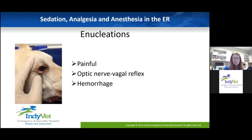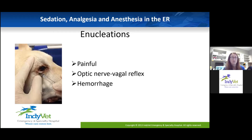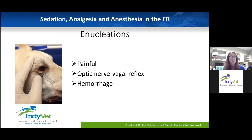Moving on to enucleations — there's no reason a GP shouldn't be able to do an enucleation. It's a very routine procedure for an ER doctor. Things to keep in mind: the big three — these are painful; you can pull on that optic nerve and cause what we call a vagal reflex, so a sudden drop in heart rate if you pull on the optic nerve; and hemorrhage — there could be significant hemorrhage if not controlled. Those are the three things I put in the back of my mind that I need to be prepared for as the anesthetist.